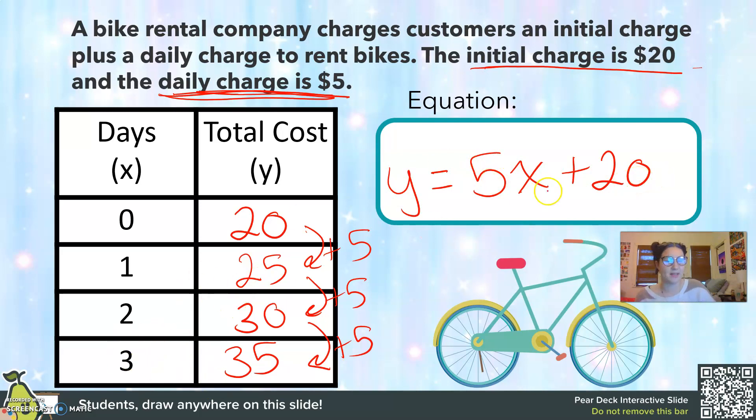Let's say I wanted to find out how much five days would cost. I just put in five days in for x. So 5 times 5 plus 20. Y equals 25 plus 20. Which would be $45 for five days.